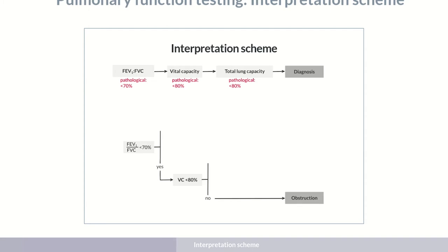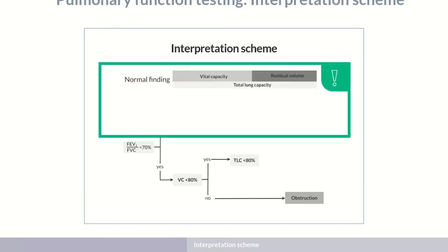In contrast, if the vital capacity is also reduced, the total lung capacity is required to make a diagnosis. In the case of a reduced vital capacity, it needs to be determined whether the total lung volume, that is, the vital capacity and the total lung capacity, are also decreased. This would be the case in restriction.